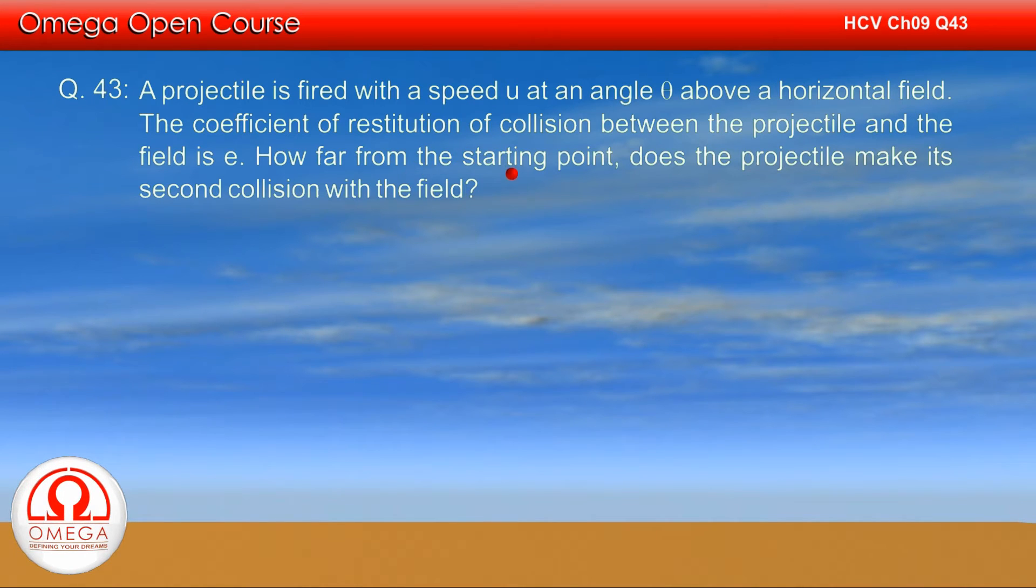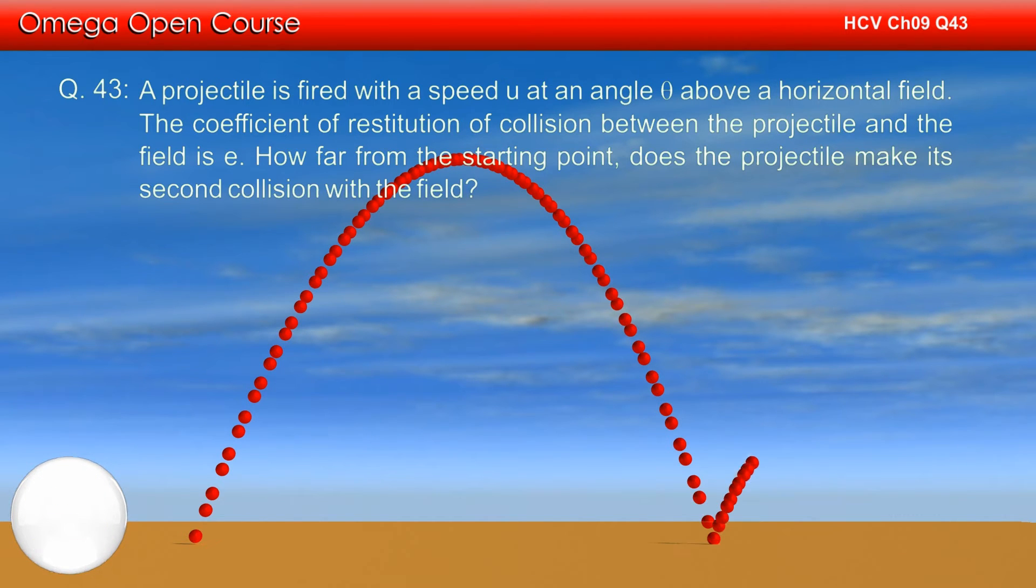A projectile is fired with a speed u at an angle theta above a horizontal field. The coefficient of restitution of collision between the projectile and the field is e. How far from the starting point does the projectile make its second collision with the field?